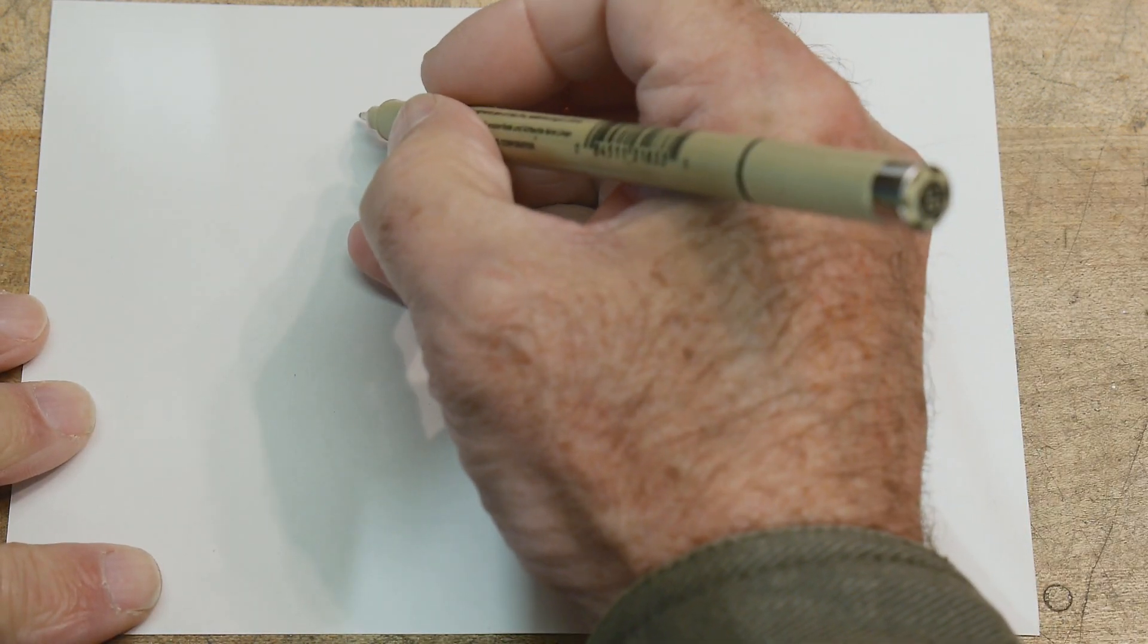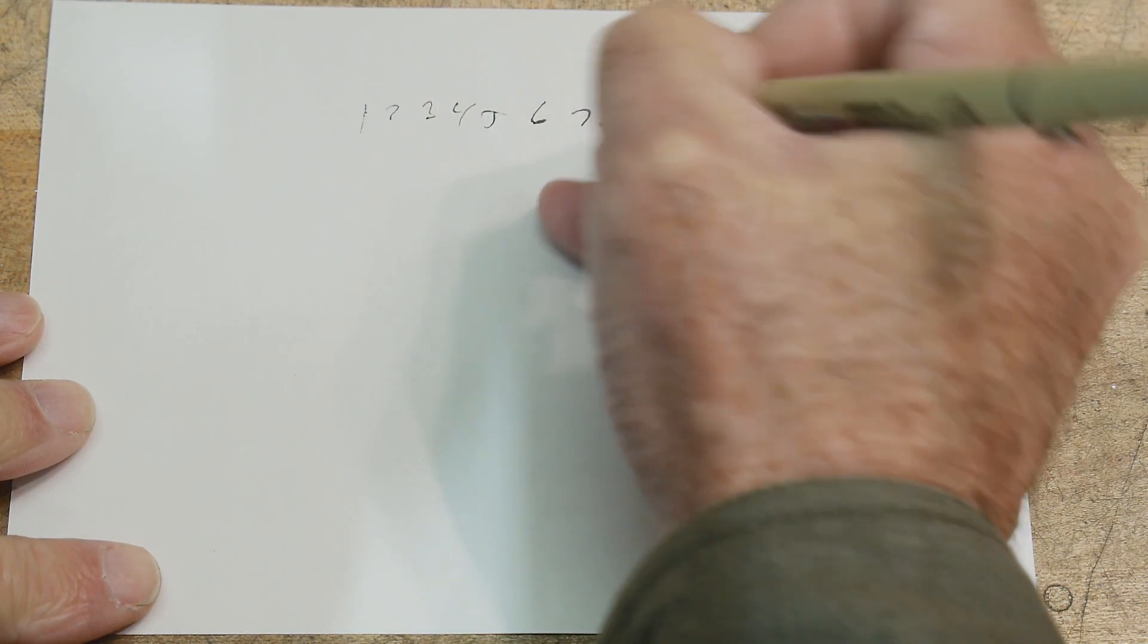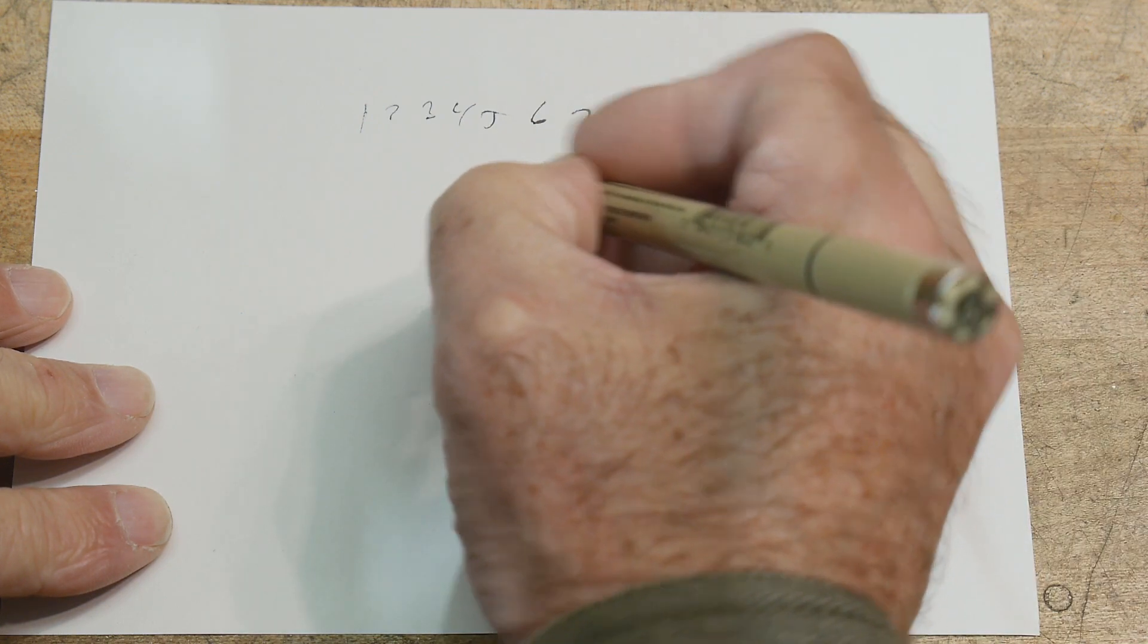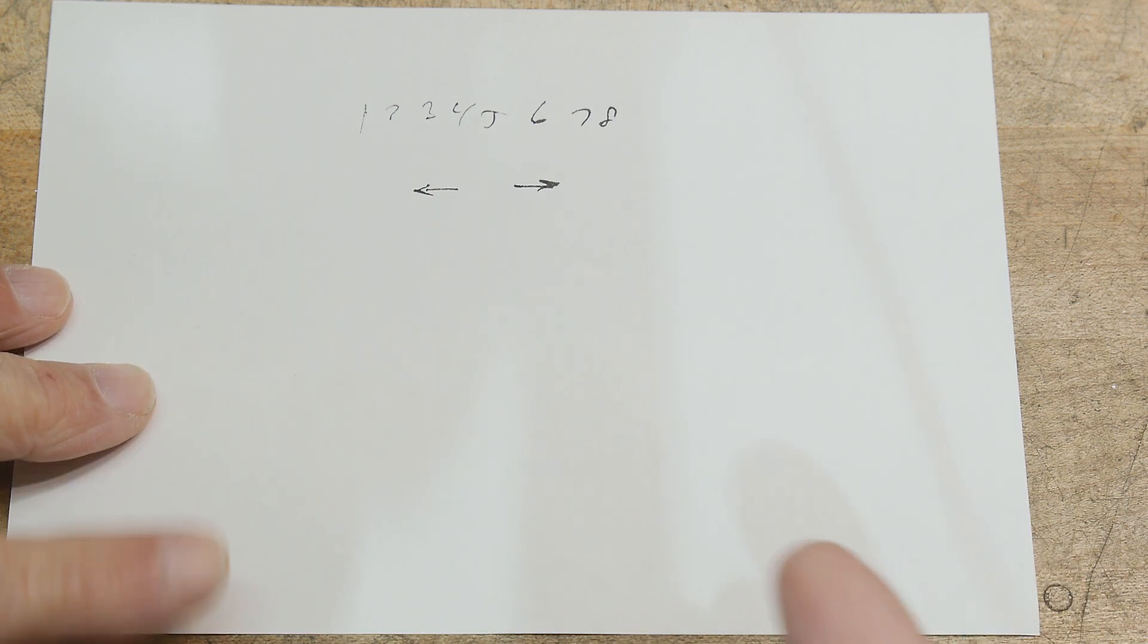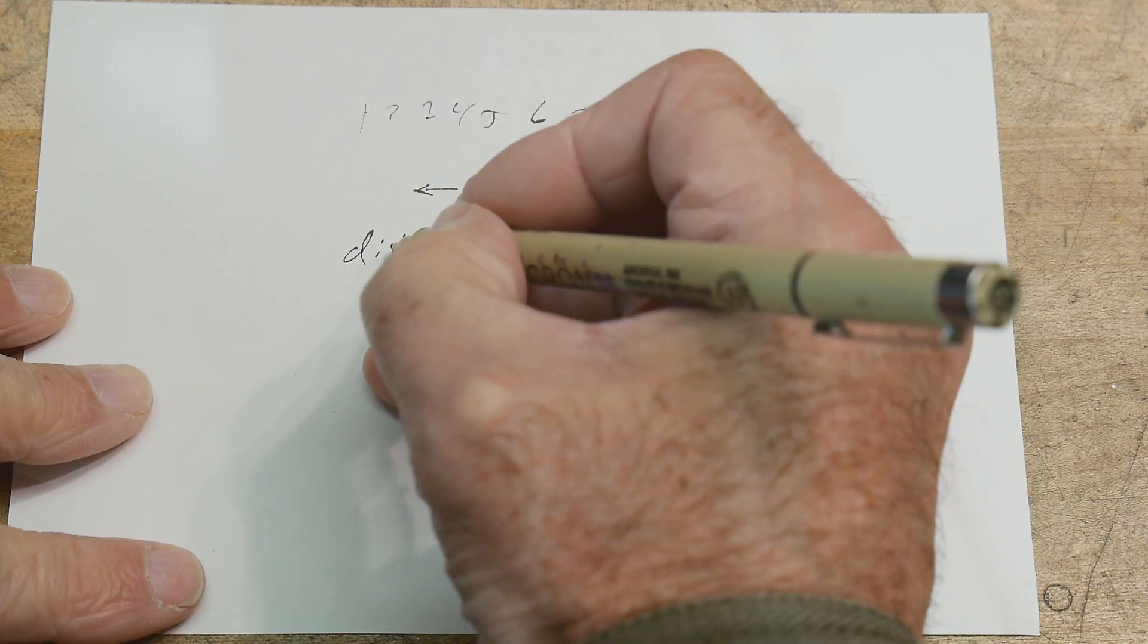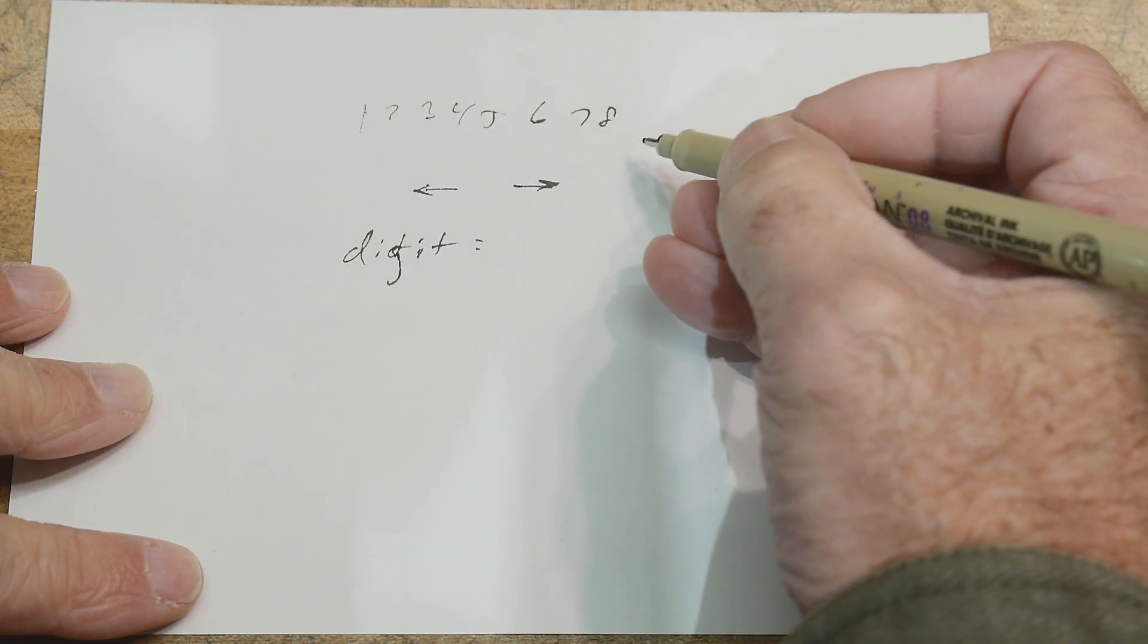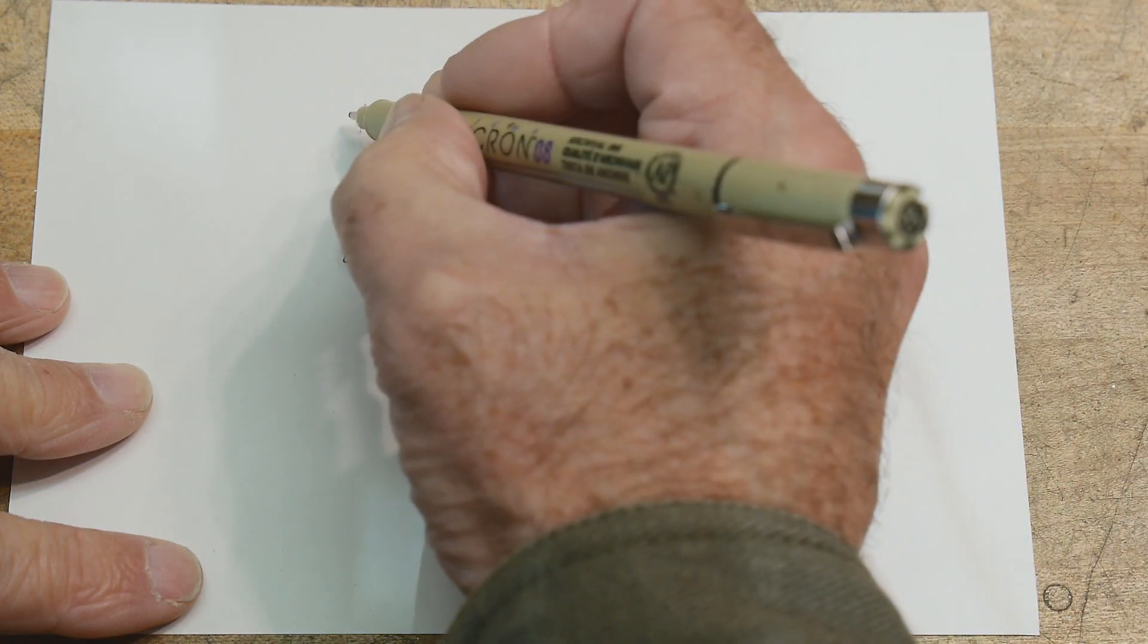Okay. So we have eight digits. My pen's drying out. So we have eight digits and we want to have a menu system to change those eight digits. And so we have a right key and a left key. So what we're going to do is we're going to create a pointer. So my pointer is called digit. And digit's going to be equal to where you are in this. So this is going to be the zero digit.